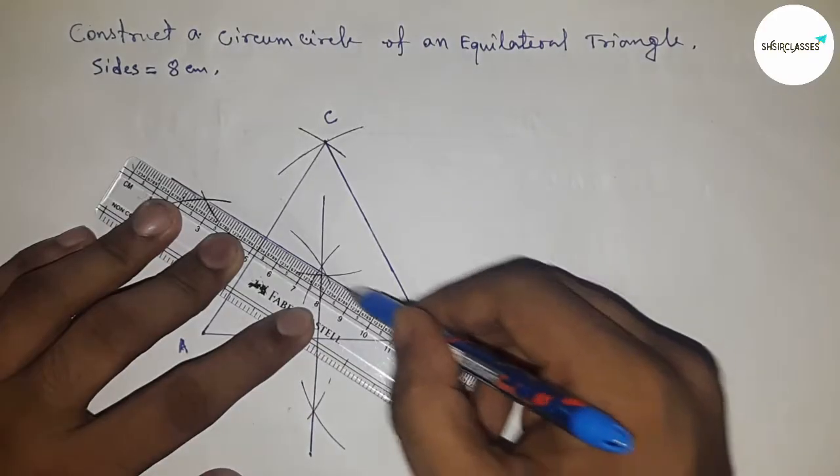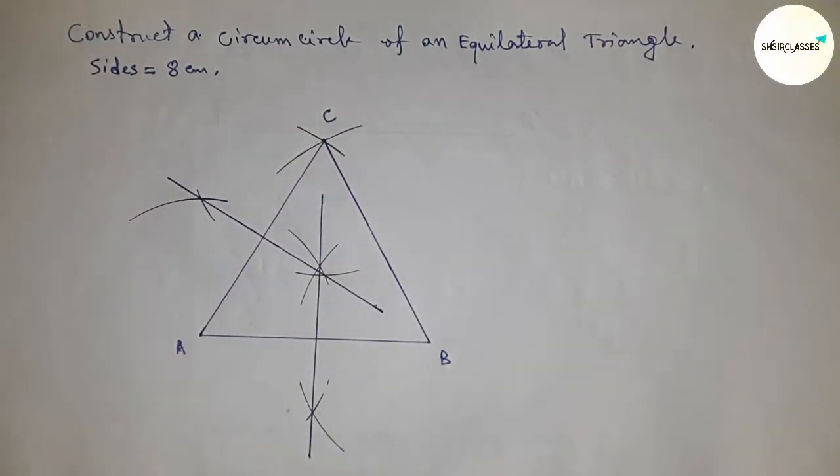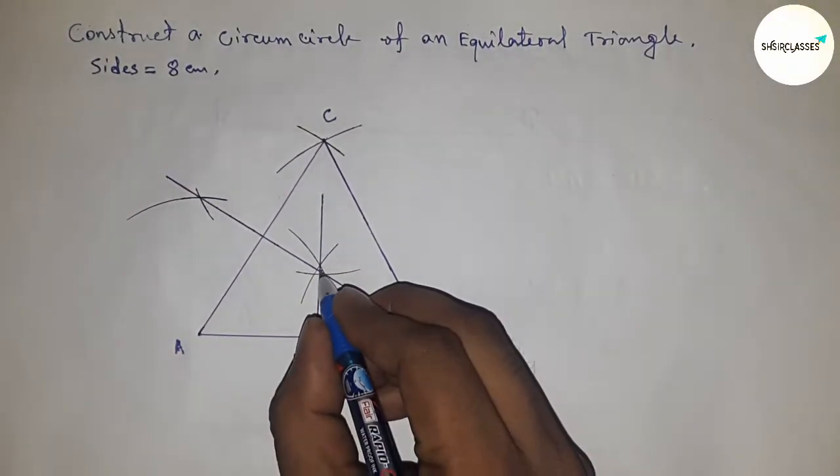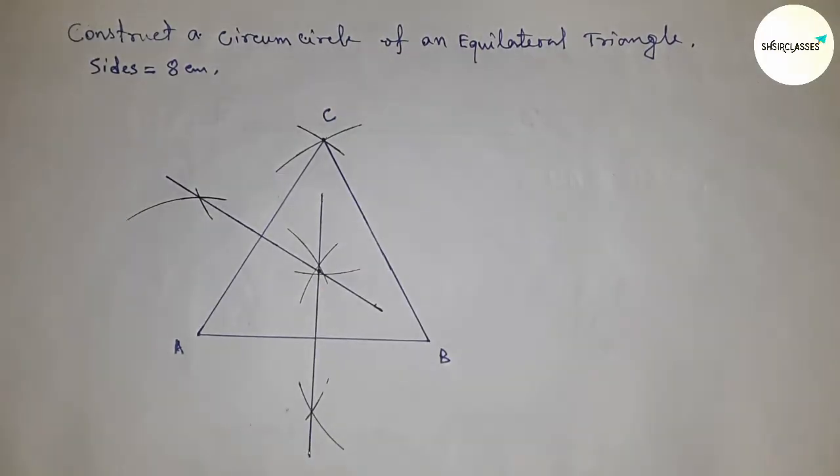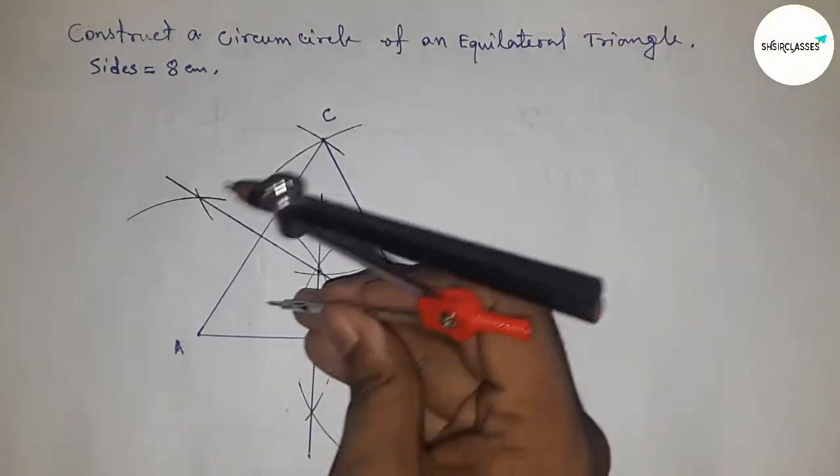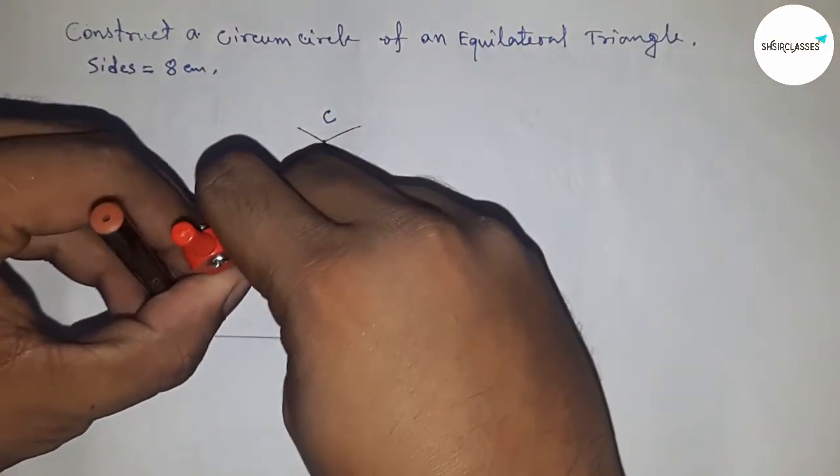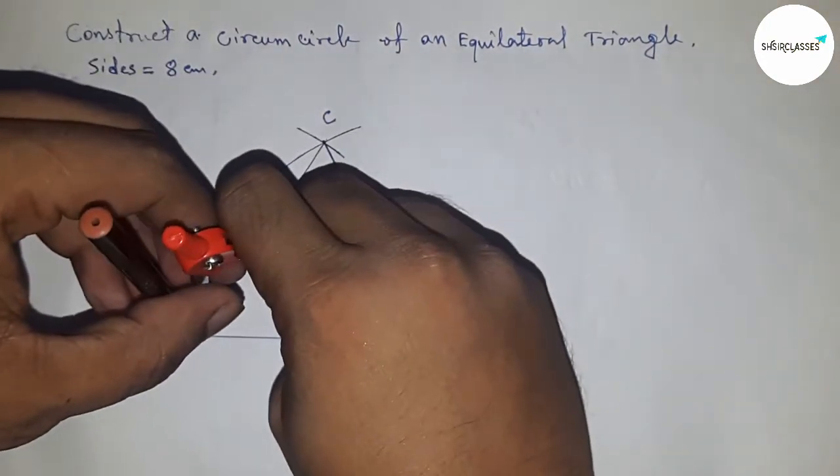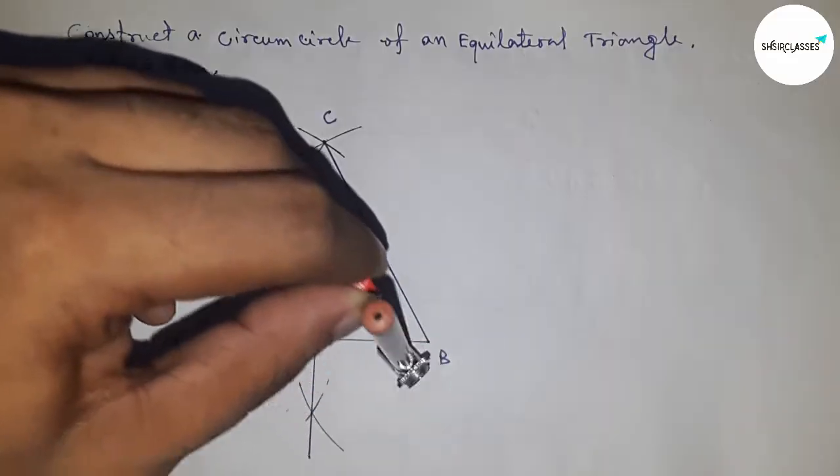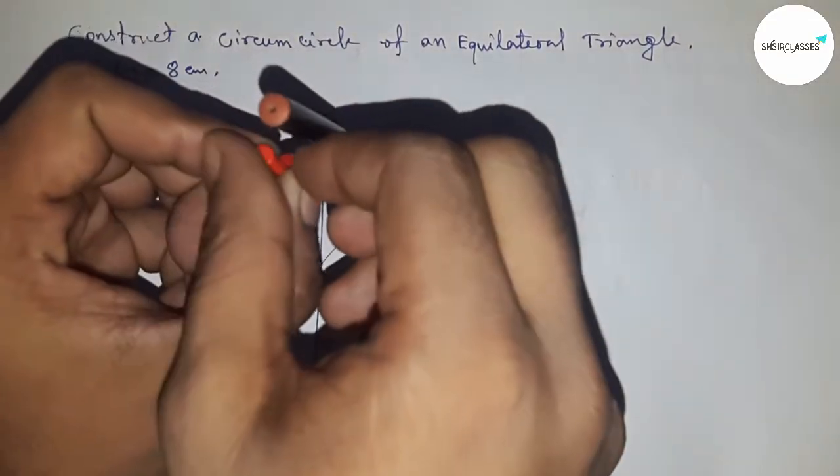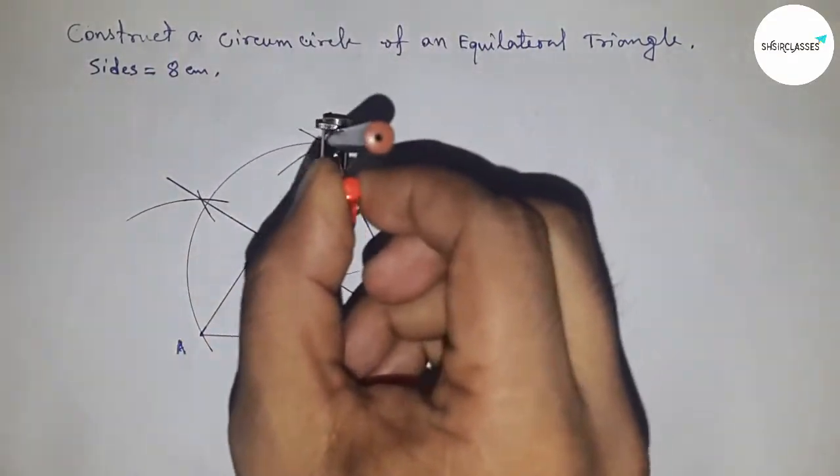joining this. So both bisectors intersect at a point O. Next, putting the compass here and taking the distance from O to the vertex. Next, drawing a circle